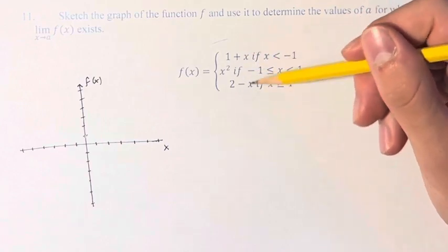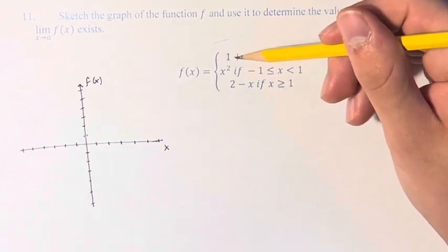So we have a y-intercept of 1, and the slope is the constant coefficient in front of x, which it doesn't have one, which means it's just 1, since this is just 1 plus 1x.